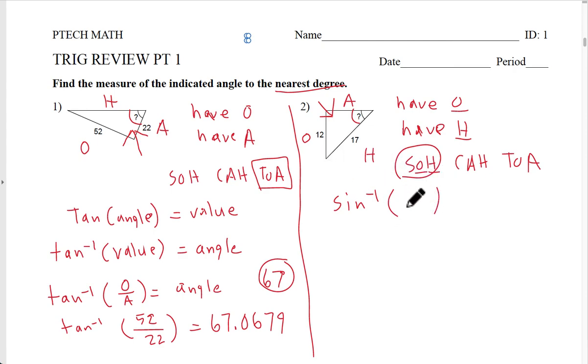So now my opposite is going to be 12 and my hypotenuse is going to be 17. So now I go to the calculator, plug that in: second function, sine button, and then I'm going to have 12 divided by 17.